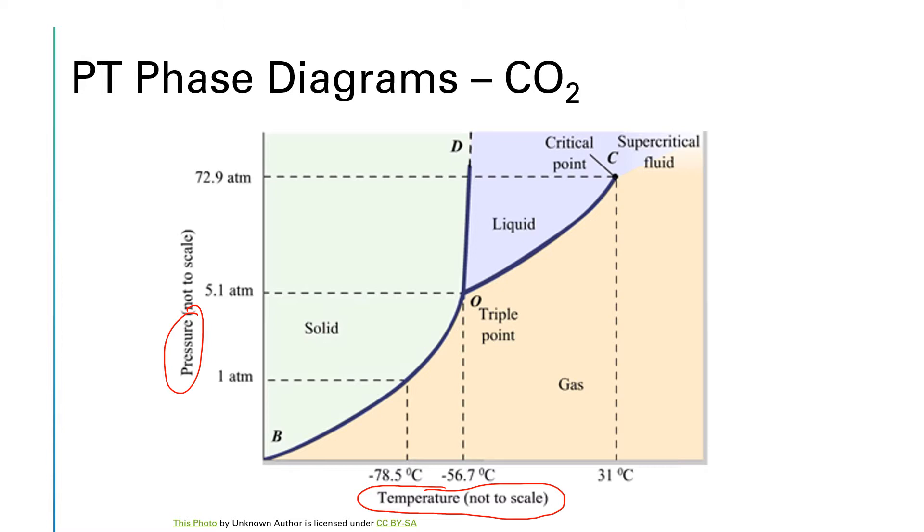At any given temperature and pressure, this diagram will tell you what state of matter is present. If we are somewhere in the green region, the state of matter will be a solid. If we're somewhere up in the purple region, the state of matter would be a liquid. And if we're somewhere in this tan region, the state of matter would be a gas.